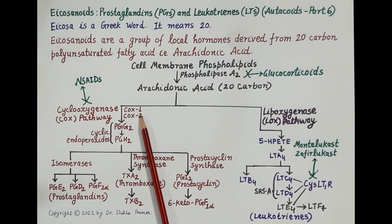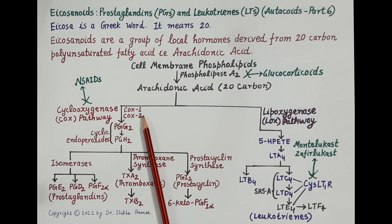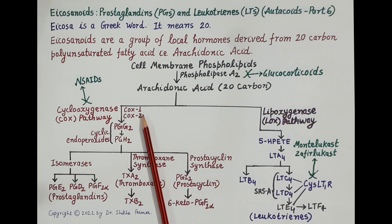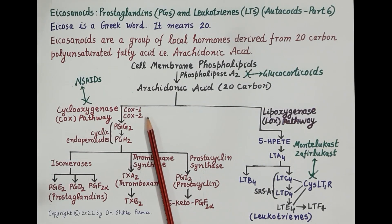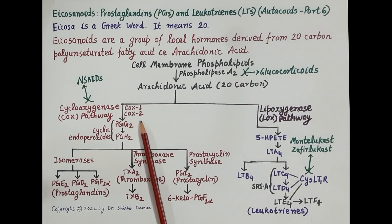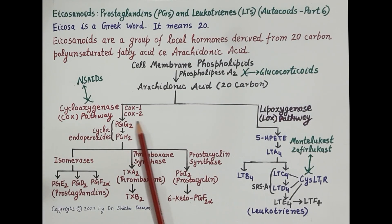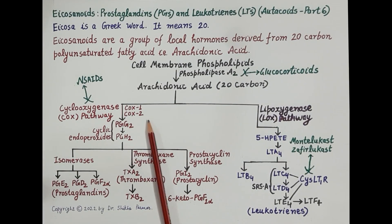COX-1 is also involved in regulating kidney function and platelet blood clotting. Because COX-1 produces prostaglandins that regulate normal body functioning, it is termed a constitutive enzyme. COX-2 is primarily found at the site of inflammation.